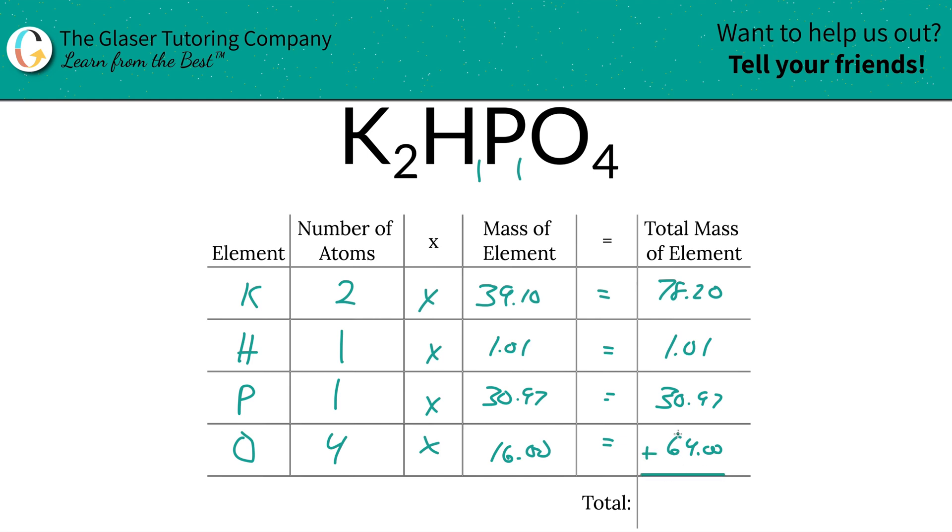Then to find the total mass of the entire compound, all you got to simply do is add up all the total mass of each individual element. So this is 174.17, and here it is. That represents the total mass of the entire compound. That's what we needed first before we can find those percentages.